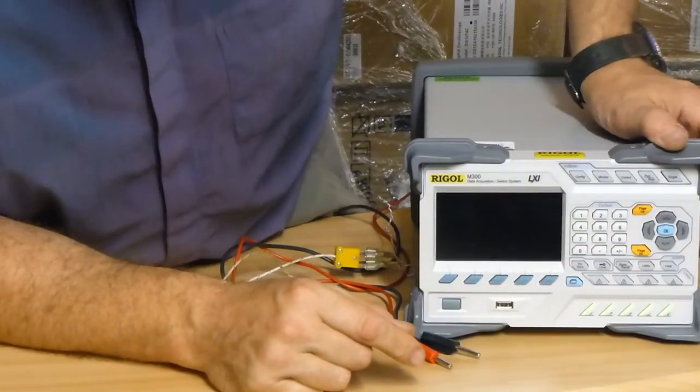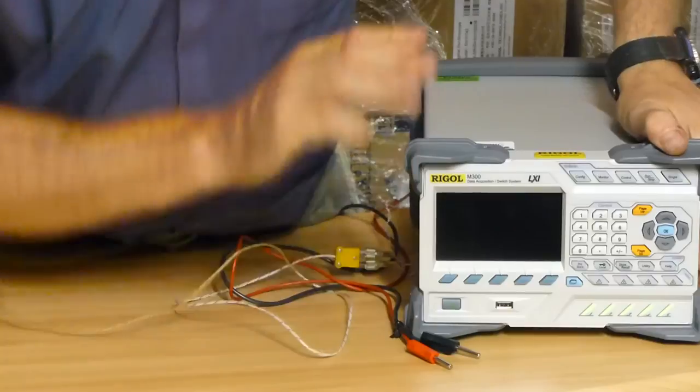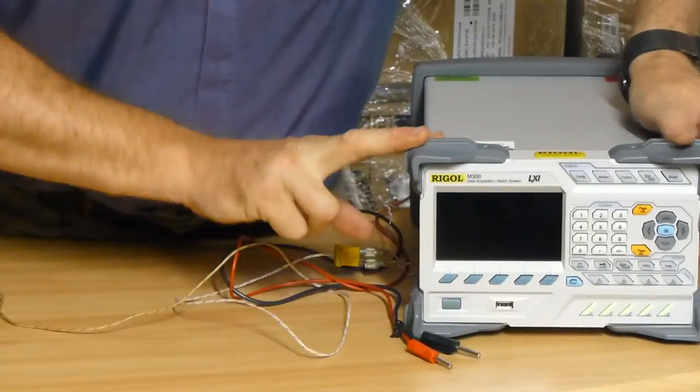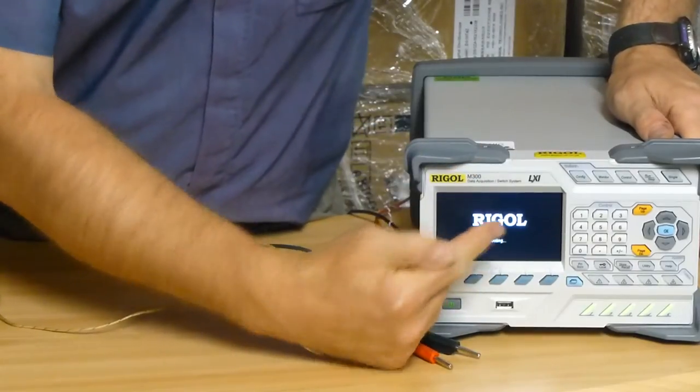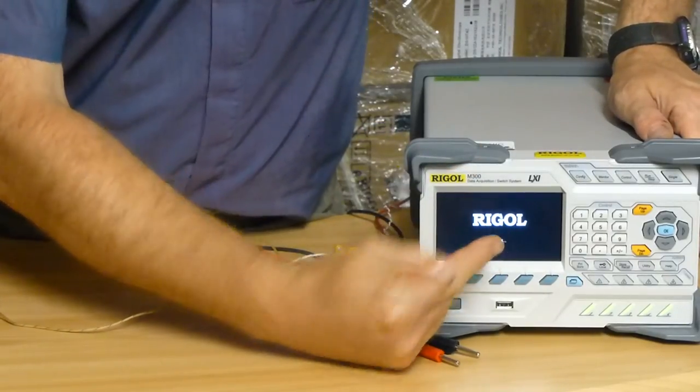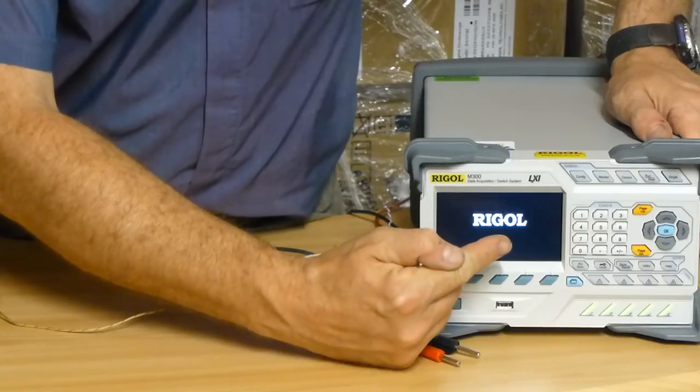What I'm going to do is power on that instrument now. While it's booting up, I'll just talk you through the range of measurements that can be made on this instrument. We're going to set it up to measure DC voltage and possibly temperature as well using that thermocouple.